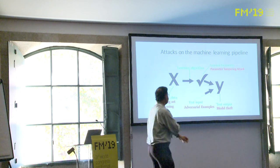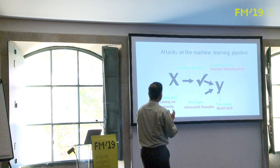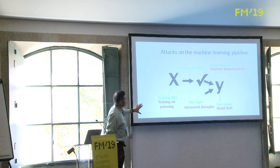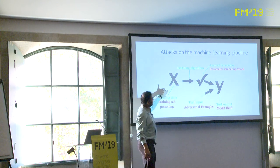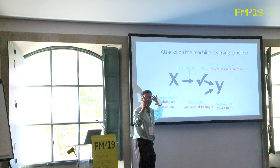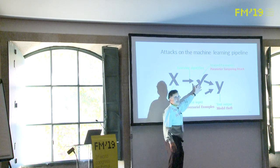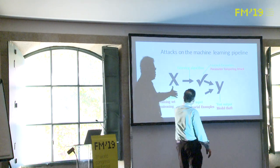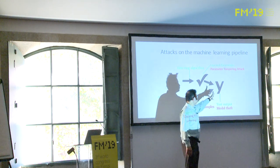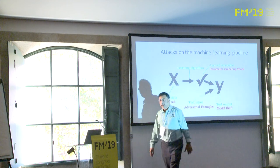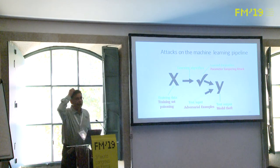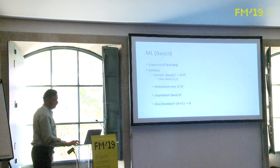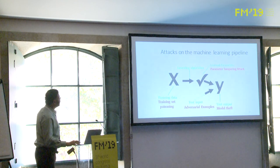Let's get into what adversarial machine learning is. This is a mock-up of a machine learning pipeline: you take training data, run your best learning algorithm, get your parameters — think about the weights of the DNN — then you put a test input in, such as 'is this a stop sign?', and you get a prediction.